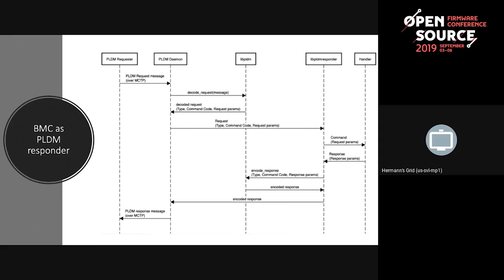That's a good question. If you're specifically talking about the host-BMC interface, that could be KCS, that could be serial, or that could be something like LPC. The good thing about MCTP is it abstracts that to the PLDM layer. The PLDM layer is still dealing with standard MCTP APIs, but you could have MCTP bindings that are plugged in which are relevant to your system or relevant to the interconnect between the two devices.